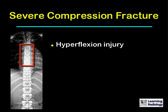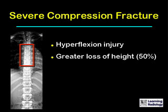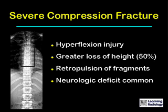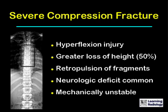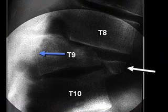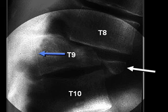Severe compression fractures are hyperflexion injuries with greater loss of height, around 50%. There is usually retropulsion of fragments, and a neurologic deficit is common. These are mechanically unstable fractures. In this example of a severe compression fracture of the thoracic spine, there is a marked reduction in height of the anterior vertebral body, retropulsion of the posterior aspect of T9 into the spinal canal, and T8 is subluxed anteriorly on T9.